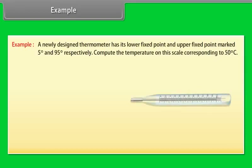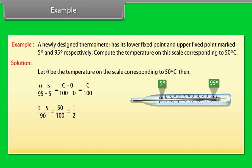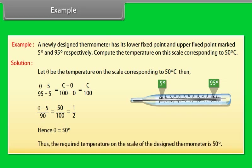Example — measurement of temperature: A newly designed thermometer has its lower fixed point and upper fixed point marked at 5° and 95° respectively. Compute the temperature on this scale corresponding to 50°C. Let θ be the temperature on the scale. Then (θ − 5)/(95 − 5) = C/100, which gives (θ − 5)/90 = 50/100. Hence θ = 50°. The required temperature on the designed thermometer scale is 50°.